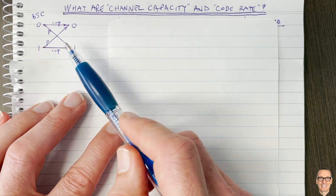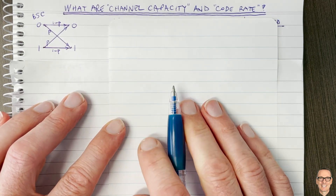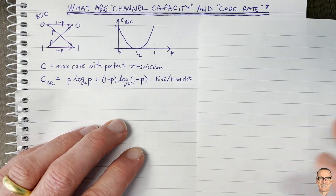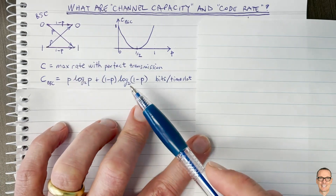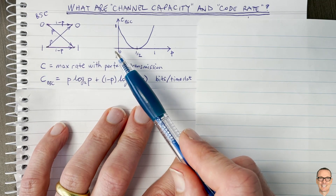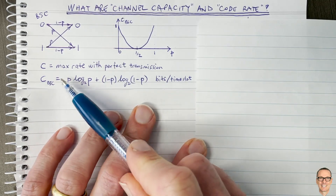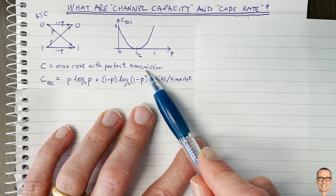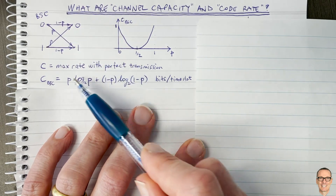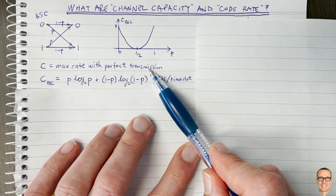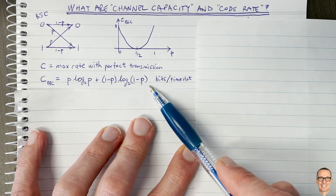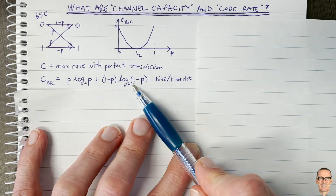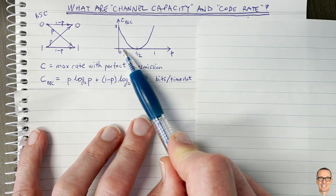In 1948, with the invention of information theory, a new concept emerged: it was actually possible to transmit completely without any errors at all, without needing to increase the power. What you needed to do was change the rate. That brings us to the concept of code rate. The definition of channel capacity is the maximum rate that can be transmitted with perfect transmission — so even though errors happen, you can correct them. For the binary symmetric channel, that rate is given by a specific formula, which is plotted here.